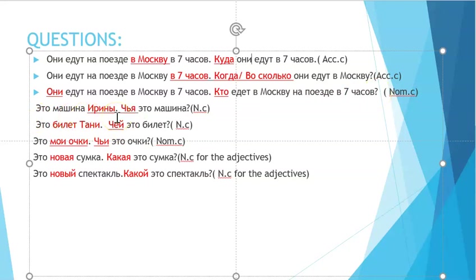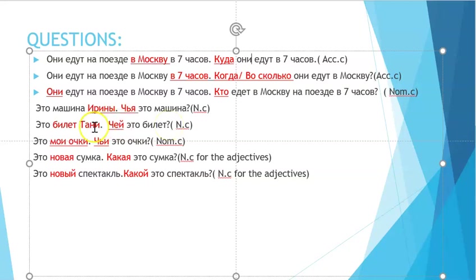For possession, 'это машина Марины' (this is Marina's car) uses the question 'чья' — 'чья это машина?' (whose car is this?). For 'это билет Тани' (this is Tanya's ticket), we agree with 'билет' in masculine form, so we say 'чей это билет?' — 'чей', not 'чья', because we agree with the ticket, not with Tanya.